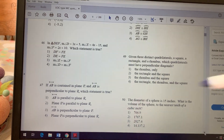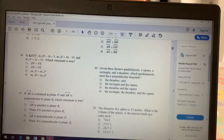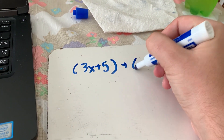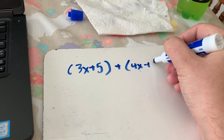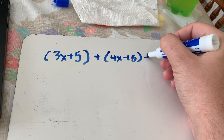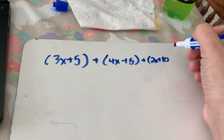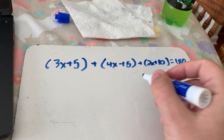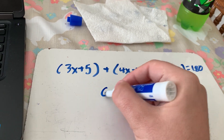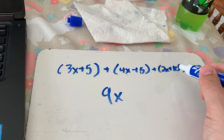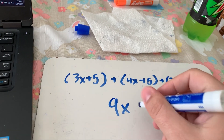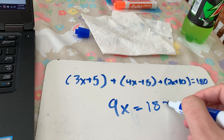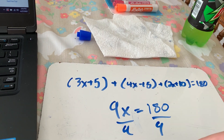So I add all three expressions and set them equal to 180: (3x + 5) + (4x − 15) + (2x + 10) = 180. Adding like terms: 3 + 4 + 2 = 9x. For constants: +5 + 10 − 15 = 0. So 9x = 180, and dividing by 9, x = 20.